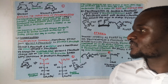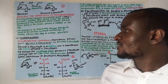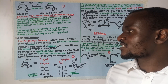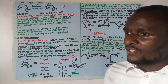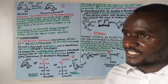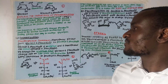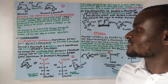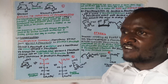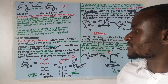Step number two is isomerization. Phosphoglucose isomerase transforms glucose from glucose-6-phosphate to fructose-6-phosphate. Glucose-6-phosphate is an aldose while fructose-6-phosphate is a ketose. To expose the aldehyde group and the keto group, the sugar molecules have to be transformed into an open chain conformation to expose those groups.